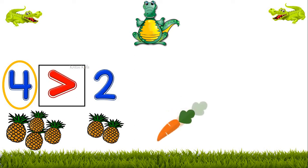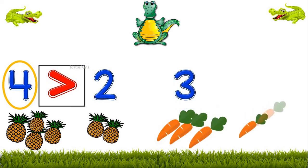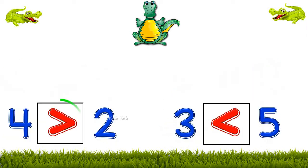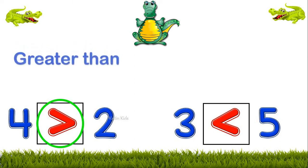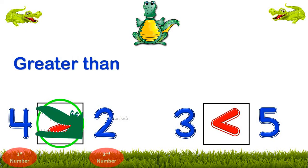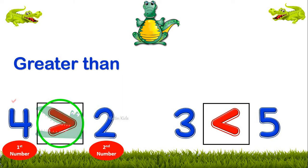Likewise, we have 3 carrots here and we have 5 carrots here. So let's put the sign. Which sign will we use? We will see that Ali's mouth is towards the bigger number — that is 5. So what are these signs called? These signs are called the greater than sign.